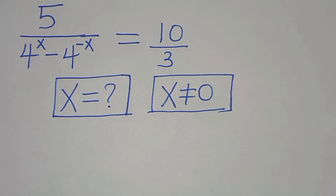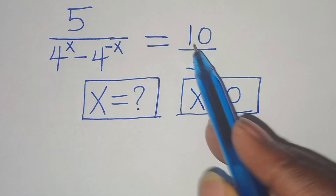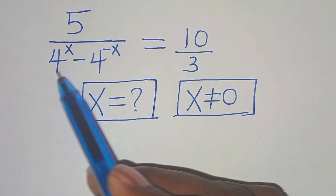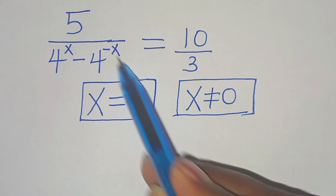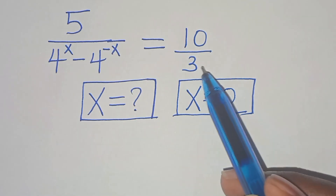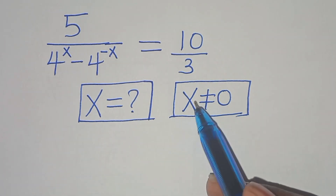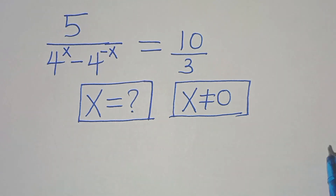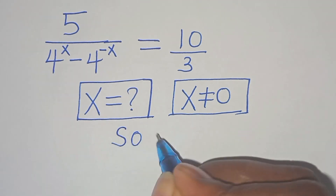Everyone, you're welcome to solve this nice algebra problem, which is 5 over 4 to the power of x minus 4 to the power of minus x. This is equal to 10 over 3. So what is the value of x given that x is not equal to 0? Let's provide a solution.